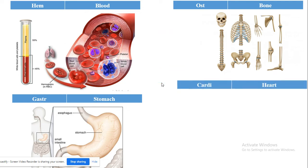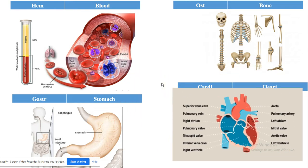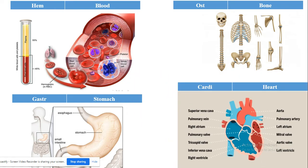We have 'cardi', meaning the heart. 'Cardi' is related to the heart. The heart is made up of four chambers: ventricles and atria (auricles). We have the left ventricle, right ventricle, left atrium, and right atrium. The heart also contains the vena cava, tricuspid valve, mitral valve, and the pulmonary artery. Anything related to the heart uses 'cardi'.